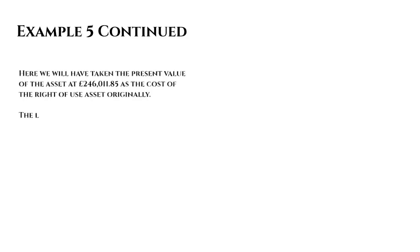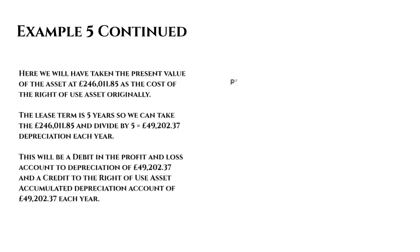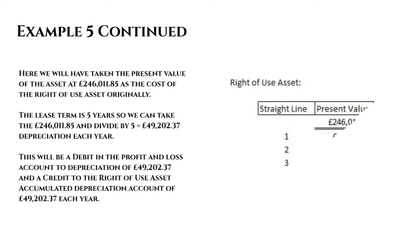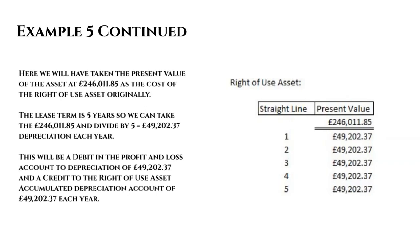For depreciation, we take the present value of the asset — £246,011.85 — as the cost. With the lease term over five years, we divide £246,011.85 by five, giving annual depreciation of £49,202.37. So we debit the profit and loss account for depreciation of £49,202.37 and post a credit to the right-of-use asset accumulated depreciation account for the same amount, reducing the asset value by approximately £49,202 every year.